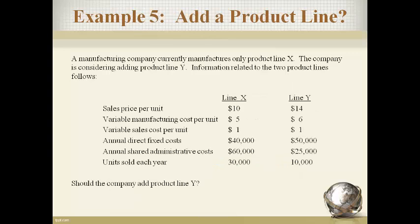Our last example is the decision to add a product line. The first step is to identify the relevant items — the sales and costs that will change for the company if product Y is added. The sales price and all variable costs related to line Y are relevant, and direct fixed costs will also change. Shared costs are the same as allocated costs — the total $85,000 is allocated to all other product lines if product Y is not added, so the total cost will not change; it will just be shared by the two products.